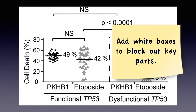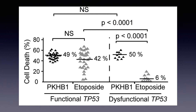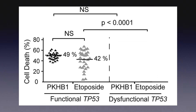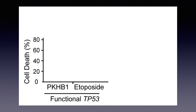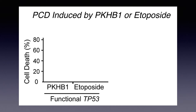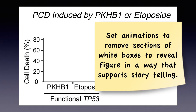So the first thing I'm going to do is add some white boxes to block out key parts of this figure. I'll make boxes filled with white with white outlines and drop them over each of the key portions. When I do that, I've made a little bit of room up top and I can put in a title. Now I'm in a position to set animations to remove sections of the white boxes to reveal the figure in the way that supports my storytelling.